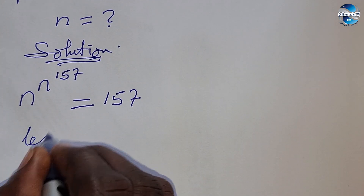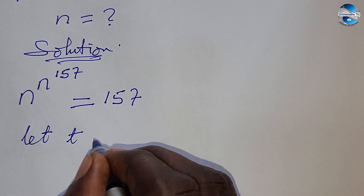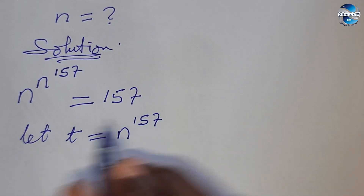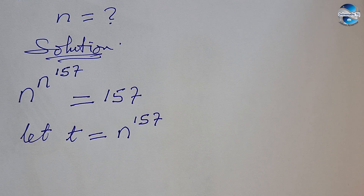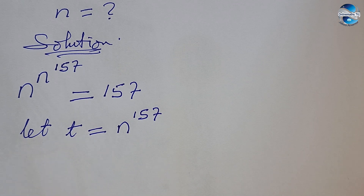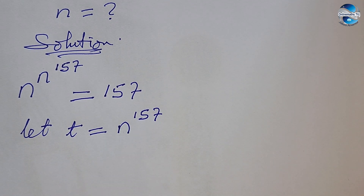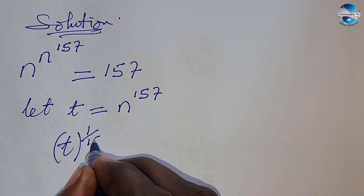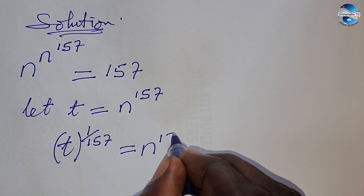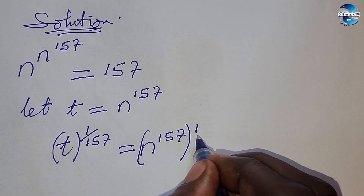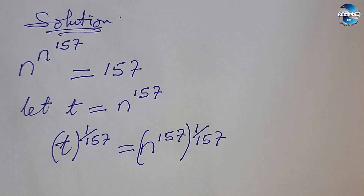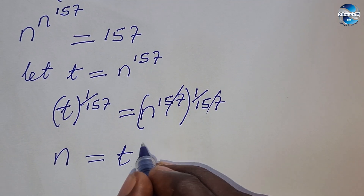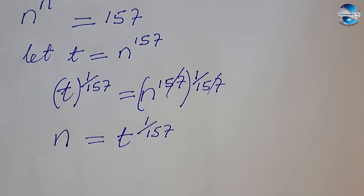Let's do a very simple substitution. Let t be equal to n raised to the power of 157. To make n the subject of the formula, we raise both sides to the power of one over 157. This gives us t to the power of one over 157 equals n to the power of 157, all raised to one over 157 — which simplifies to t to the power of one over 157 equals n.